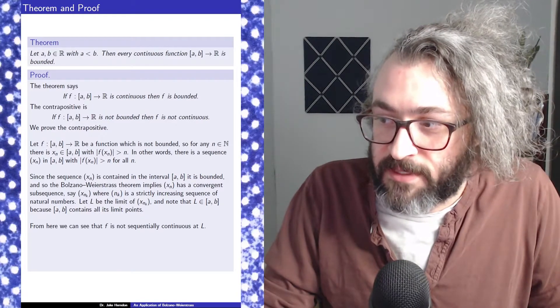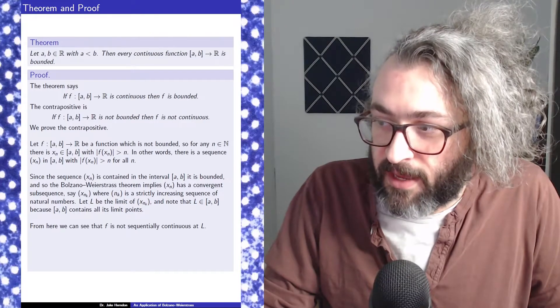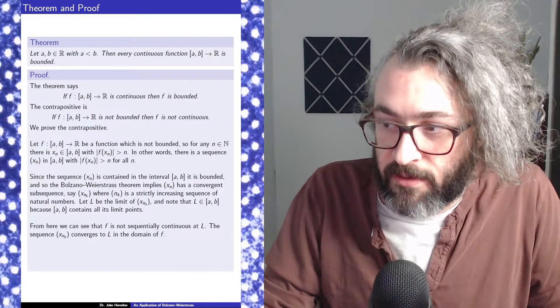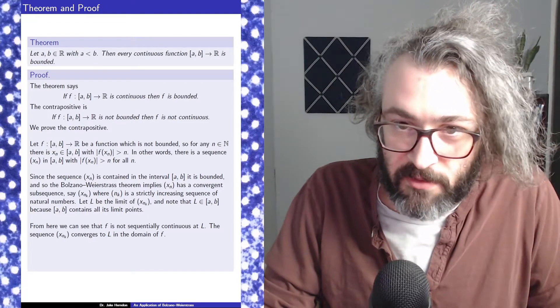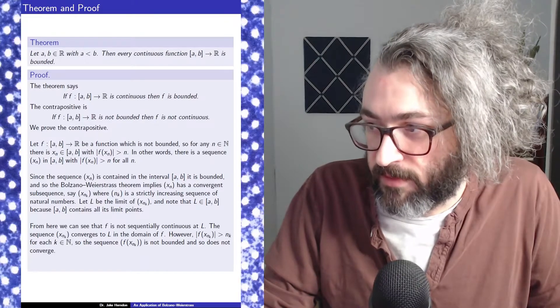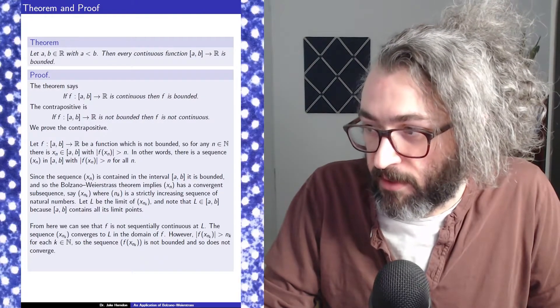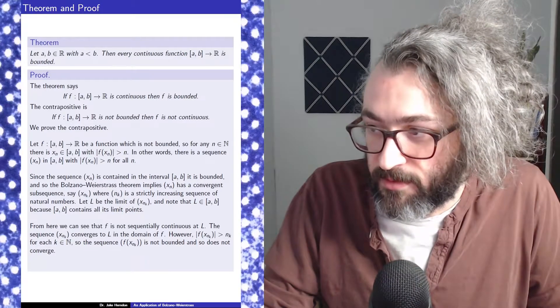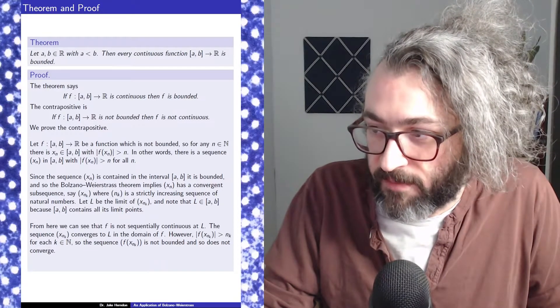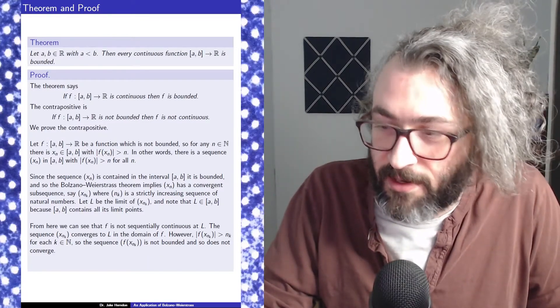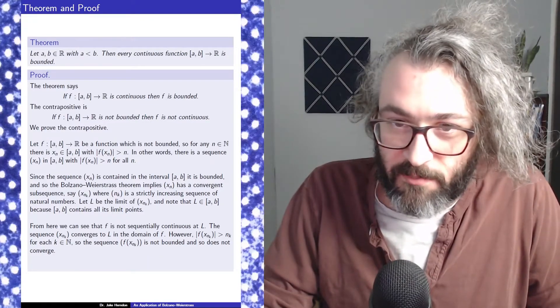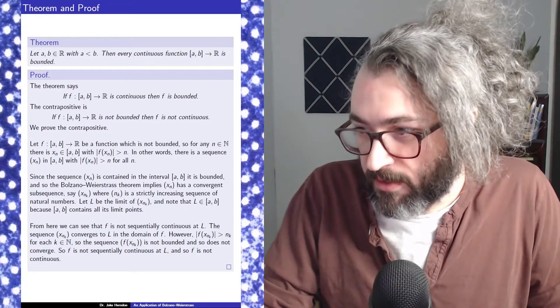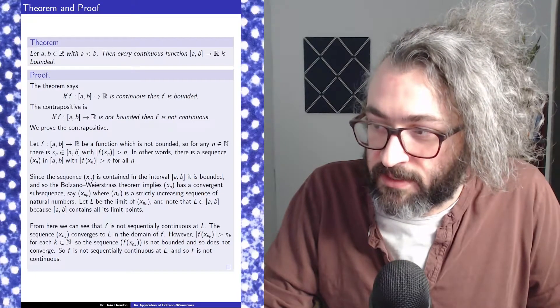From here we can see that f is not sequentially continuous at l. So the sequence x_{n_k} converges to l in the domain of f. However, the absolute value of f(x_{n_k}) is always greater than n_k. So that means the sequence f(x_{n_k}) is not bounded. And because it's not bounded, it also does not converge.